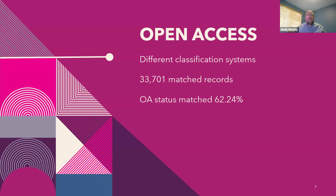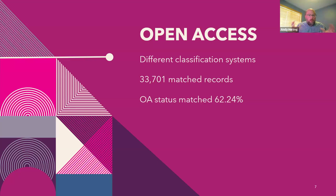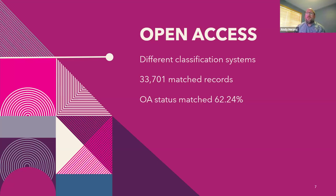In talking about open access, the two datasets use different classification systems. Pure uses Open, Closed, and Indeterminate, while OpenAlex uses Closed, Bronze, Gold, Green, and Hybrid. Looking at those 33,000 matched records, the OA status matched only 62% of the time. The biggest discrepancy was records classed as indeterminate, where OpenAlex's system had more detail about that status. Besides the indeterminate cases, about 5% just disagreed on whether content was open or closed, which was a pretty small grouping.